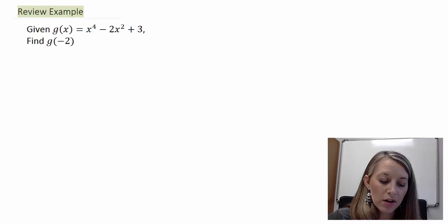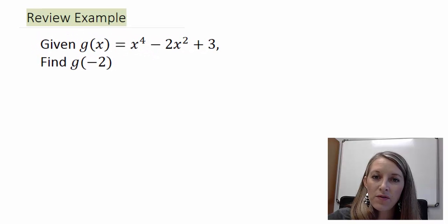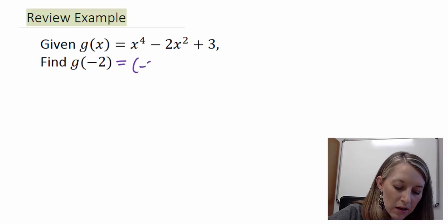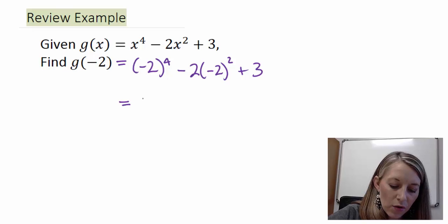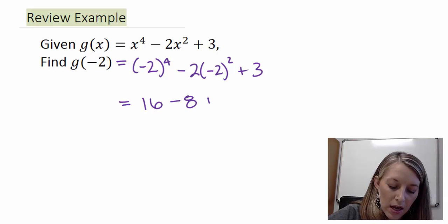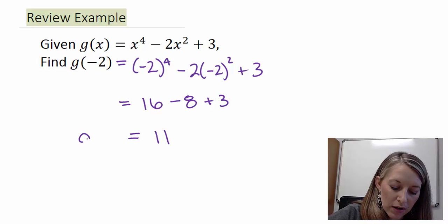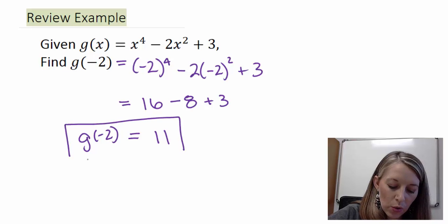Given a polynomial function g of x equal to x to the fourth minus 2x squared plus 3, figure out what g of negative 2 is. That gives me negative 2 to the fourth minus 2 times negative 2 squared plus 3. Negative 2 to the fourth gives me positive 16; negative 2 squared gives me 4, times negative 2 gives me negative 8. So 16 minus 8 gives me 8, and 8 plus 3 gives me 11. So g of negative 2 equals 11.